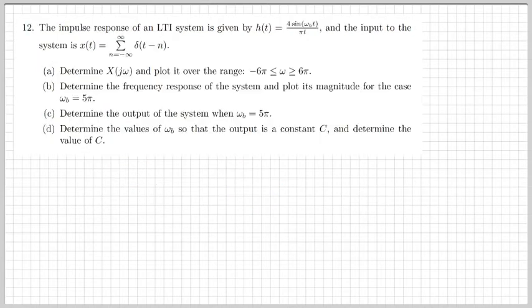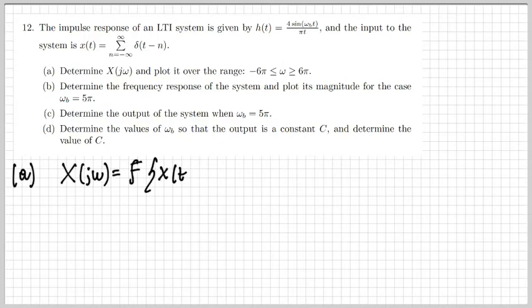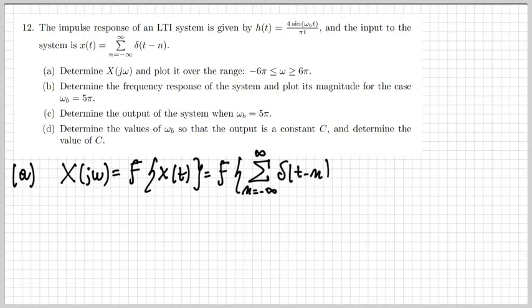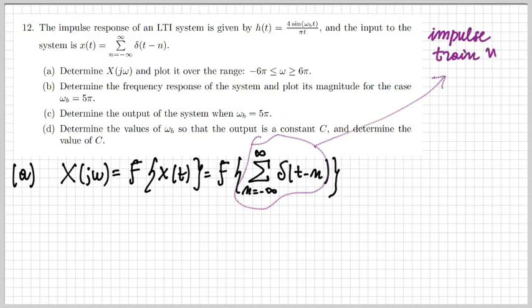The next exercise is about an LTI system with impulse response h of t, which is a sinc function. I provide an input x of t defined as an impulse train. So I need to determine first of all the Fourier transform of this input, which is an impulse train with period one, because it's given by the sum of delta of t minus n.